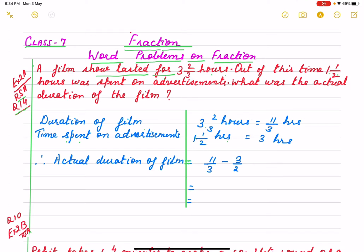It is Exercise 2A, RS Aggarwal book, question number 14. The question is: a film show lasted for three and two by three hours. Out of this time, one and a half hours was spent on advertisements. What was the actual duration of the film? First, when you write a mixed fraction, you must write it the correct way.